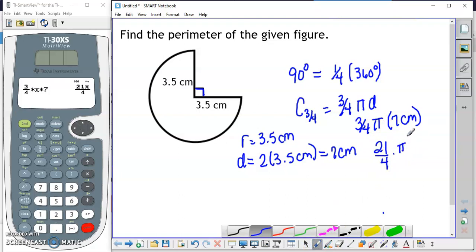That's the three-fourths of the circle, so that's the outside portion. But we need to add back the two radii to get the entire perimeter. So the perimeter is going to be 21-fourths times pi plus 7 centimeters.